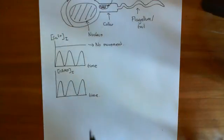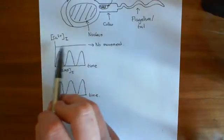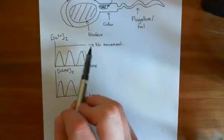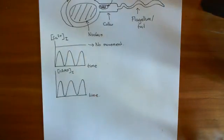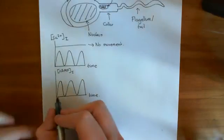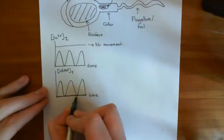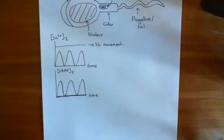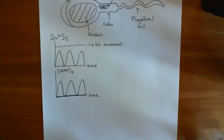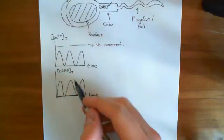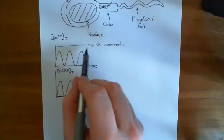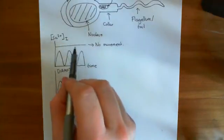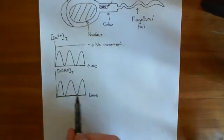Now, if we repeat the experiment where we put in very high, constantly high calcium levels - we know we get no movement - and look at what happens to the cyclic AMP level, we find that cyclic AMP remains low. If you just have continuously high calcium levels, that doesn't stimulate adenylyl cyclase 8. The adenylyl cyclase 8 enzyme requires oscillations in calcium in order to actually be activated. If you just have a constantly high calcium level, the cyclic AMP level remains low.